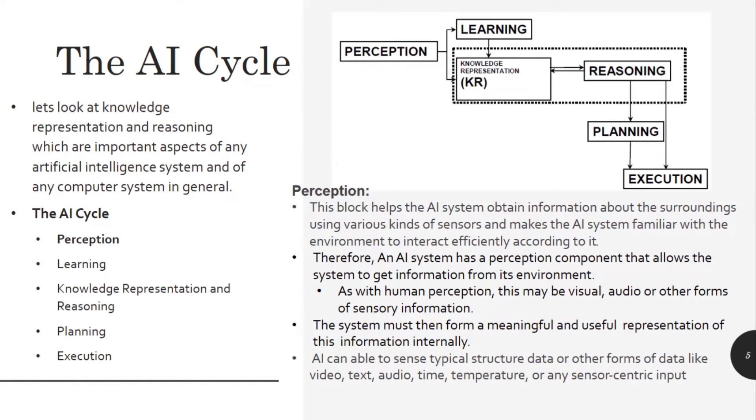The first component of the artificial intelligence cycle is perception. This block helps the AI system obtain information about the surroundings using various kinds of sensors and makes the AI system familiar with the environment to interact efficiently. An AI system has a perception component that allows the system to get information from its environment. As with human perception, this may be visual, audio or other forms of sensory information. The system must then form a meaningful and useful representation of this information internally. AI can sense typical structure data or other forms of data like video, taste, audio, time, temperature or any sensor-centric input.